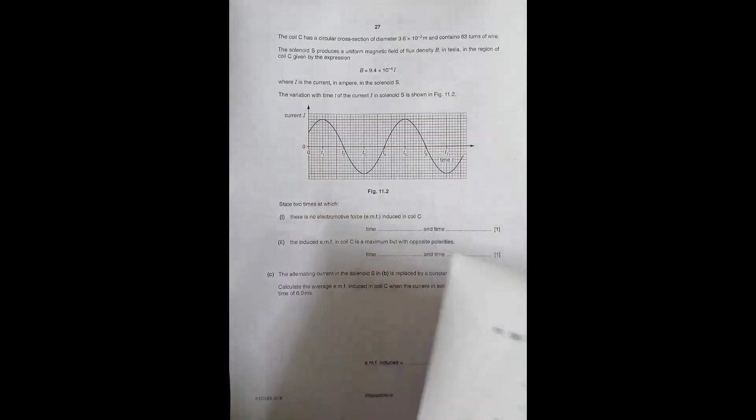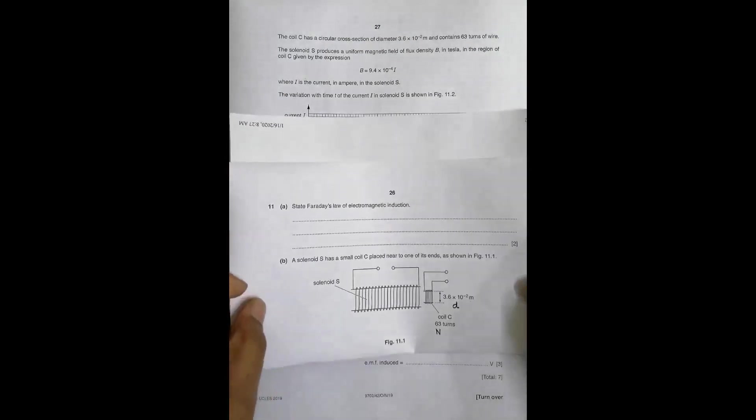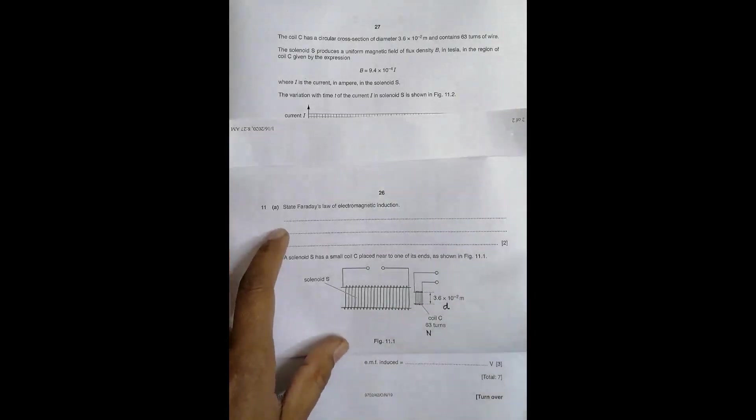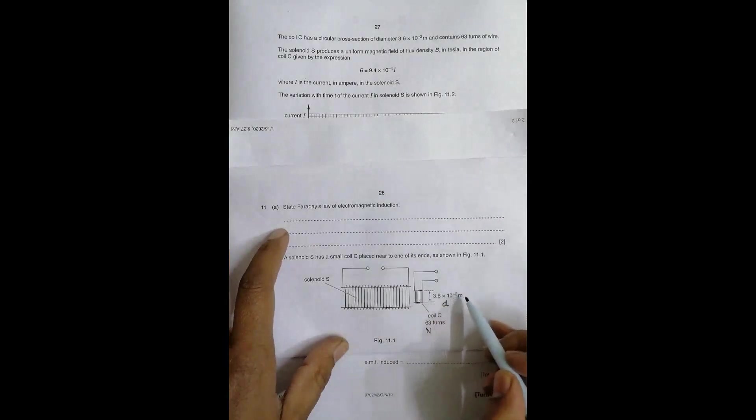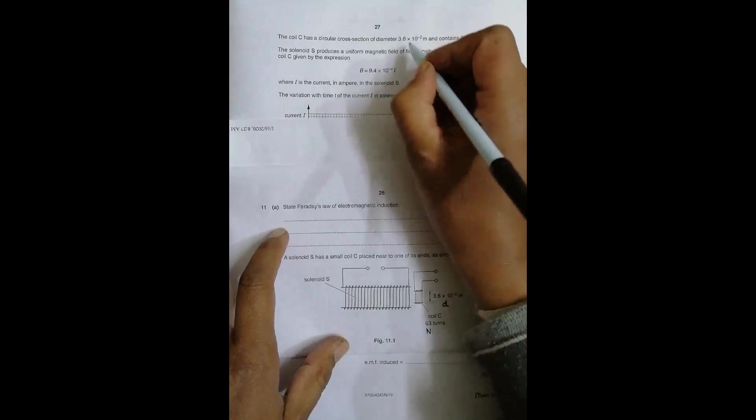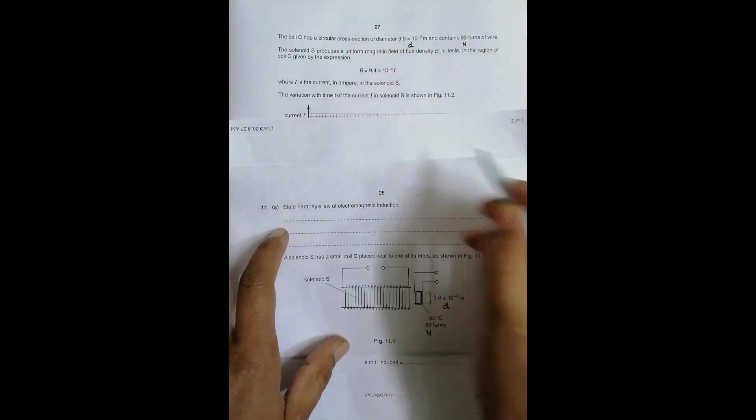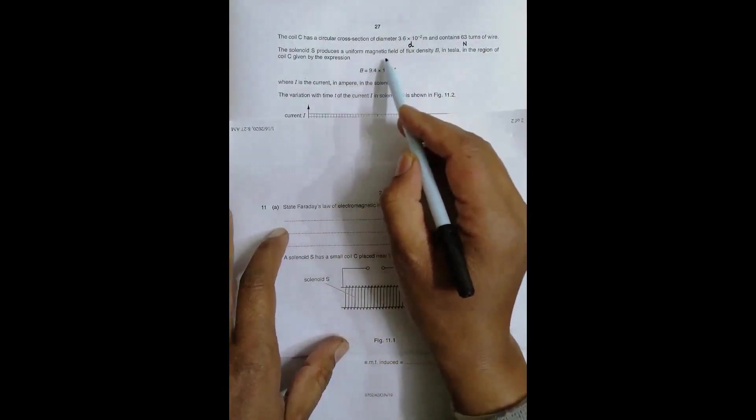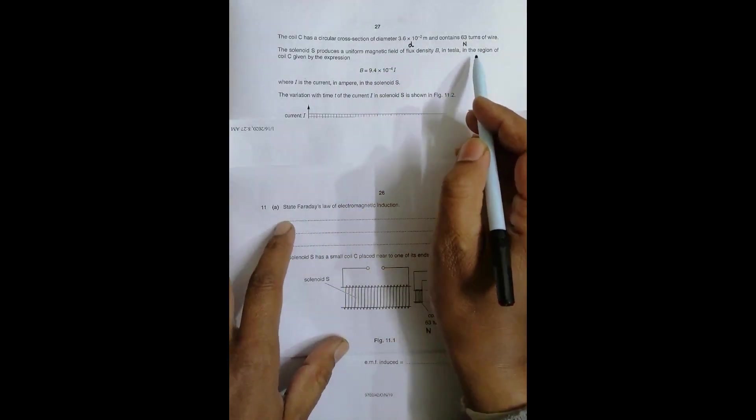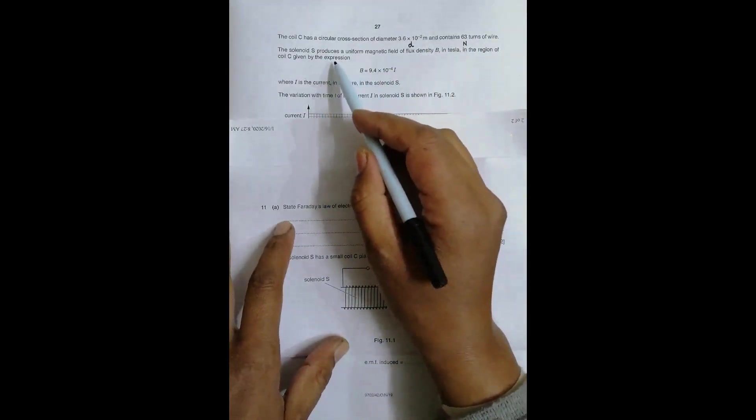The coil C has circular cross section of diameter 3.6 × 10⁻² meters. The diameter is 3.6 × 10⁻² meters, contains 63 turns. The solenoid S produces a uniform magnetic field of flux density B in Tesla in the region, given by the expression.